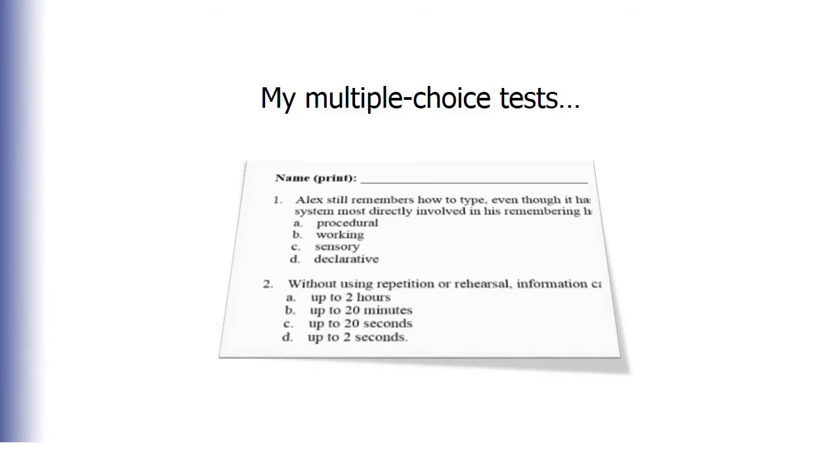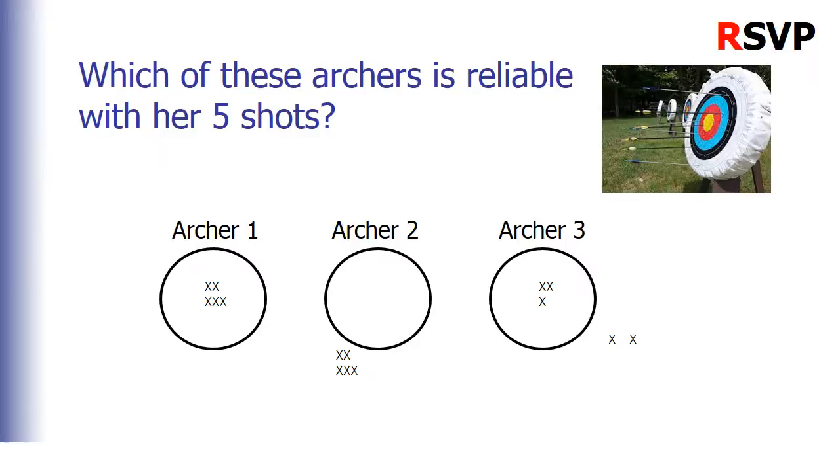Now I want to ask you a question. Which of these archers is reliable with her five shots? The answer is archers one and two. Do you see why? Even though archer two did not even hit the target, she was consistent. And the definition of reliability involves consistency. So for that reason, even archer two is reliable. Archer three is not reliable because her shots are not in a consistent pattern.